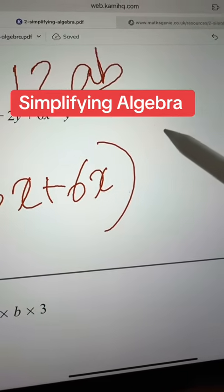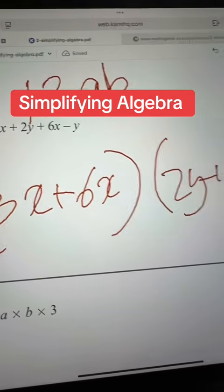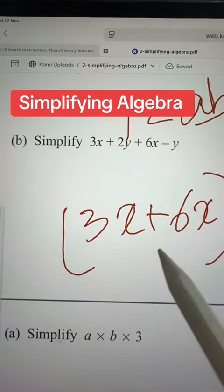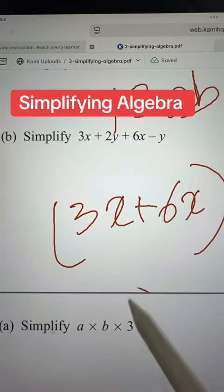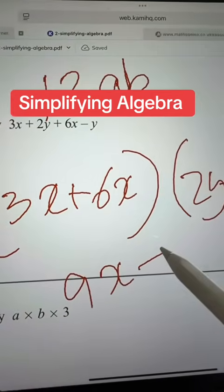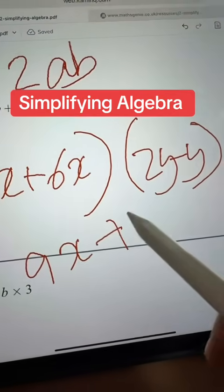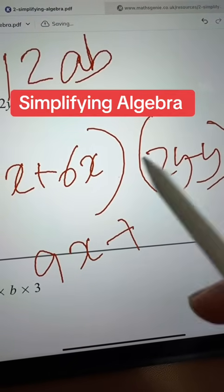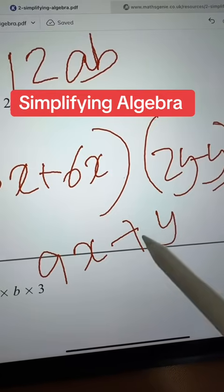And get all the y's together 2y minus y. So that would be 9x plus, but you minus it but we take the sign of the bigger one, plus y.